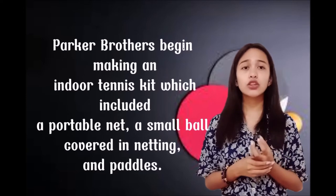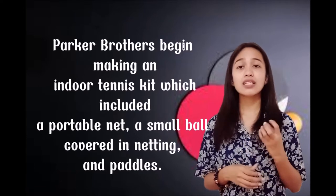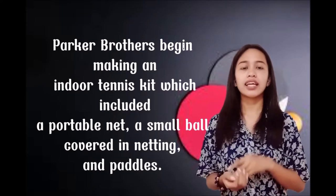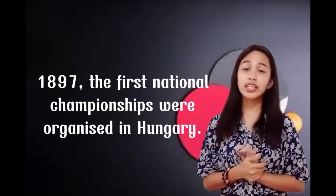In the 1890s, Victorian society used cigar boxes, books, and champagne cork. Then in 1891, John Jax discovered the Gossima game and produced drum-type paddles, a cork ball, and a high net. Parker Brothers began making an indoor tennis kit which included a portable net, a small ball covered in netting, and paddles. In 1897, the first national championships were organized in Hungary.